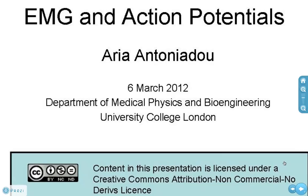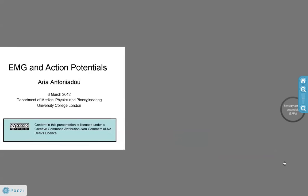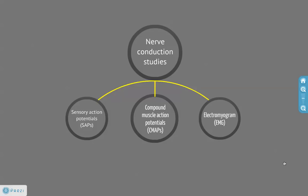I am Ari Antoniadu and today I'm going to be talking to you about EMG and action potentials. Generally, nerve conduction studies are divided into three groups: the sensory action potentials, the compound muscle action potentials, and the electromyogram, also known as an EMG.